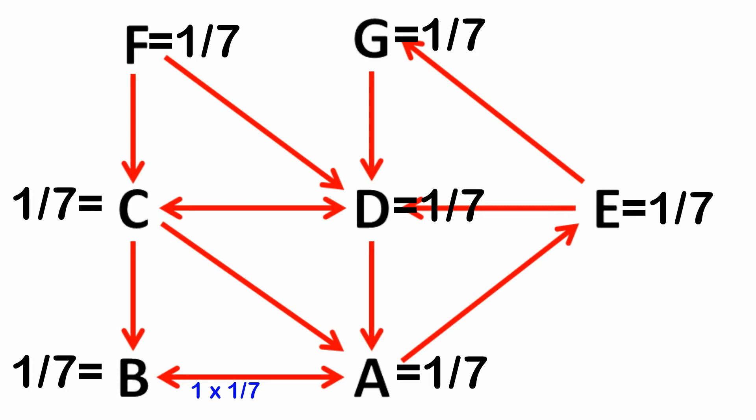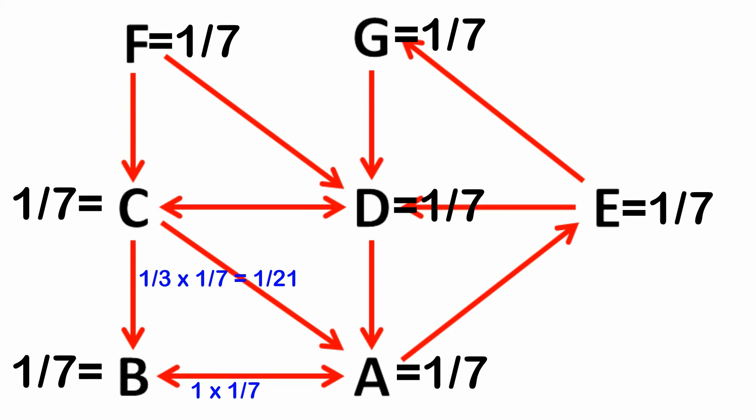Now C links to three sites: D, B, and A. So let's share C's importance rating of one-seventh equally amongst D, B, and A. So A gets one-third of one-seventh, and that's one twenty-first from C. Now from D, website A gets a half times a seventh, which equals a fourteenth. And from E, F, and G, website A receives no importance. So now we can total them up. Overall, A's importance ranking after one iteration is one-seventh plus one twenty-first plus one-fourteenth, which is about 26.2 percent.